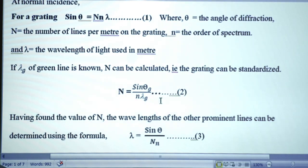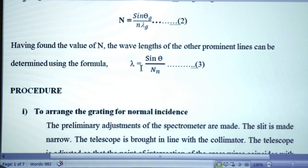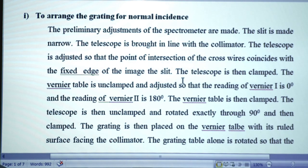Using the value of N obtained from standardization, we can find the wavelength of other lines — violet, blue, bluish green, yellow, red, etc. — of the mercury spectrum using the formula λ = sin θ / (n·N), where θ is the angle of diffraction produced by that particular wavelength. Now coming to the procedure: we want to adjust the grating in the normal incidence position.